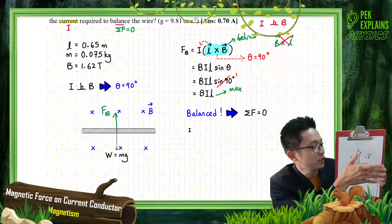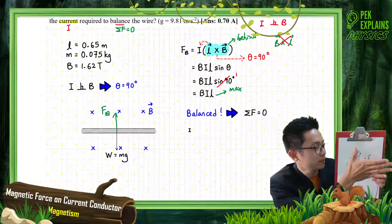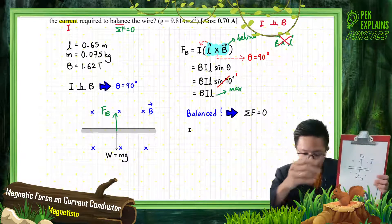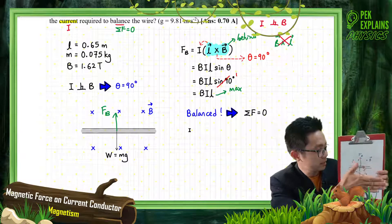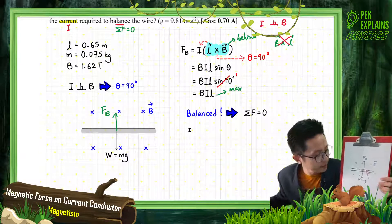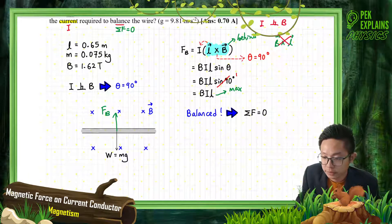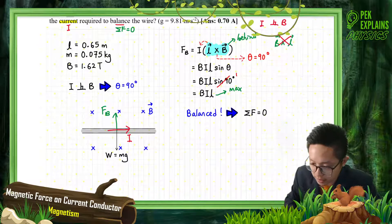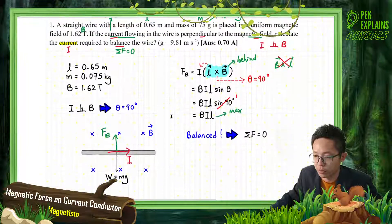So my current is to the right. Magnetic field into the page, force upward, and current to the right. That's the direction of the current. Now let's find the magnitude.